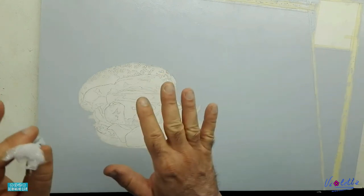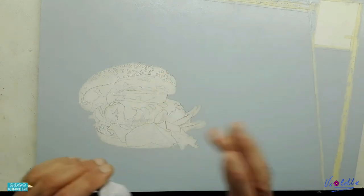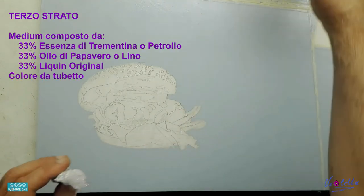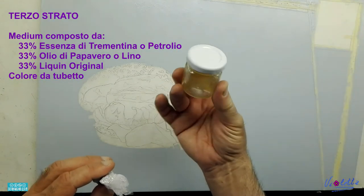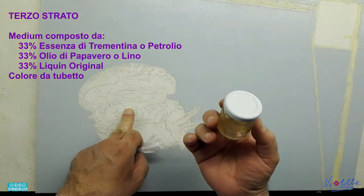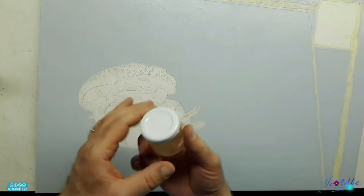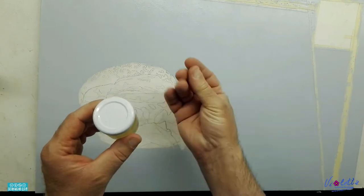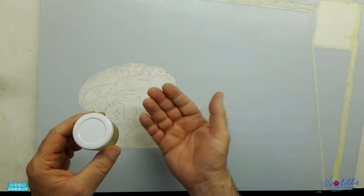So between the first and second coat given with the liquid, I passed the retouching varnish made as I had said. The third coat instead I passed with the medium that I will use to create the main subject and also the lines, so that the film that comes out once dry will be equal to that of the background.